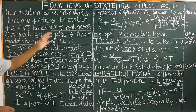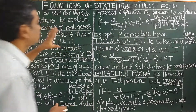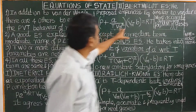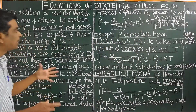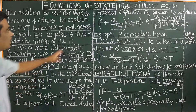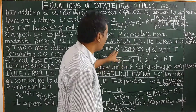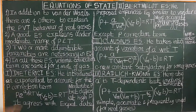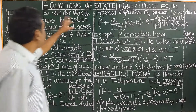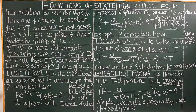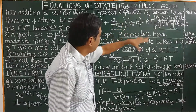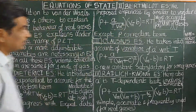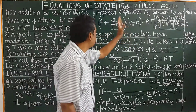If you look at all the equations of state, the volume correction term remains the same across all of them. Only the pressure correction term is modified by the scientists to better explain real gas behavior. These equations of state are given for one mole of gas.